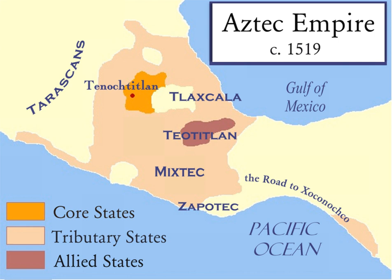Early dynastic Egypt was based around the Nile River in the northeast of Africa, the kingdom's boundaries being based around the Nile and stretching to areas where oases existed.